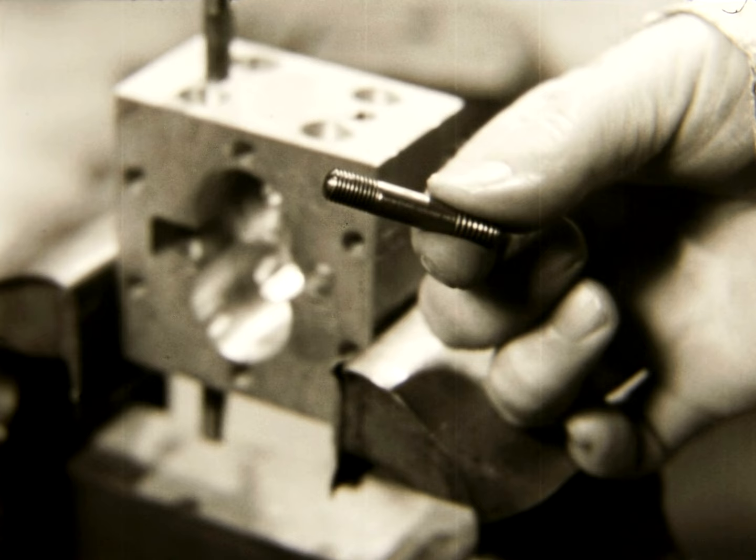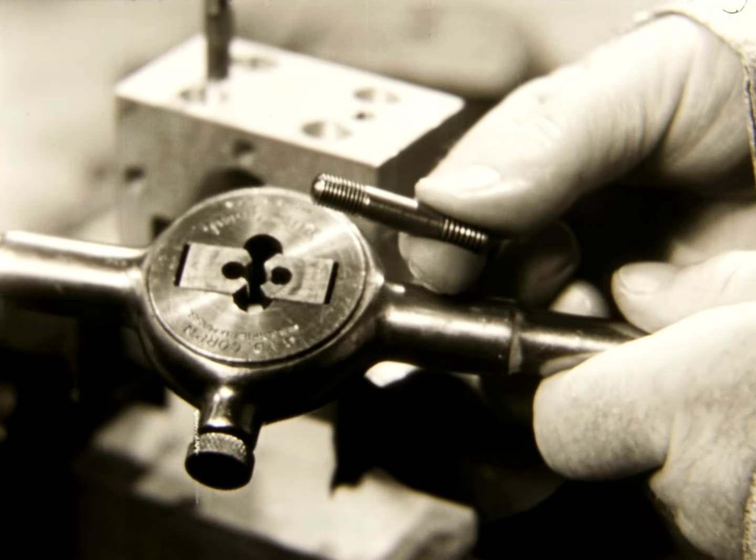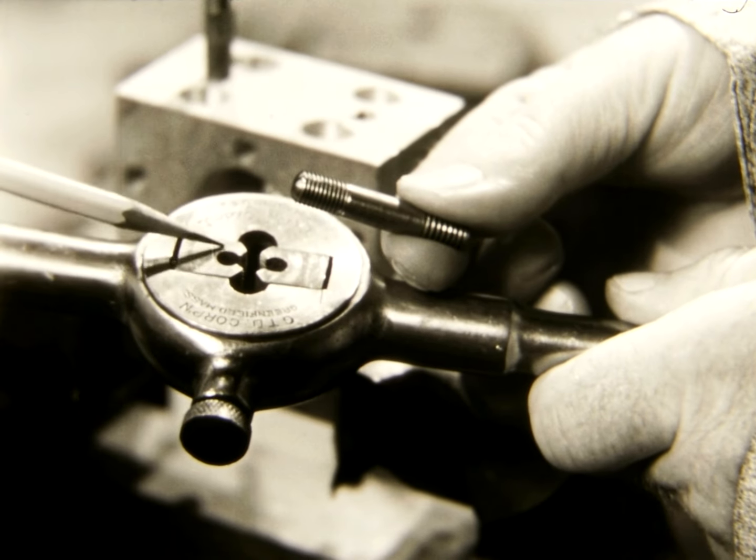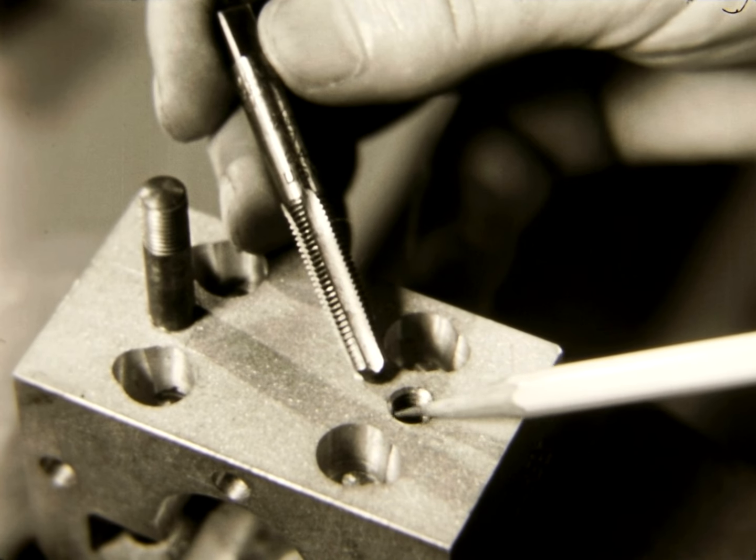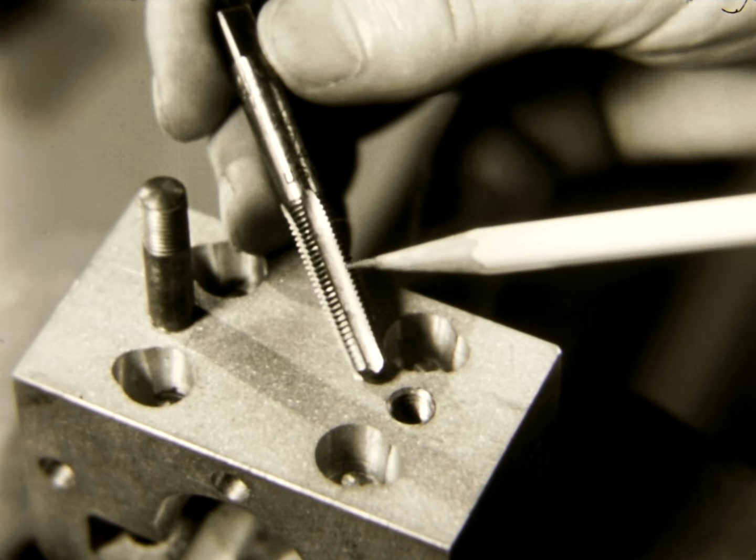External threads when cut by hand are cut with a die. Internal threads when cut by hand are cut with a tap.